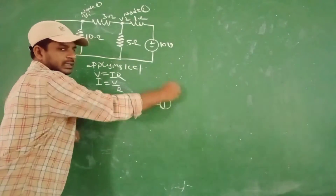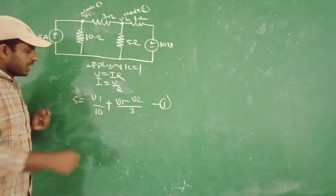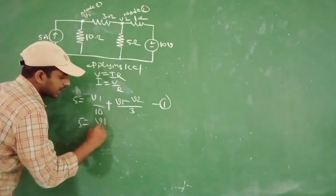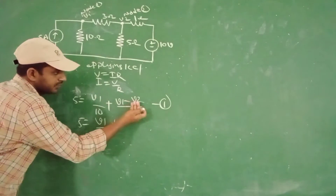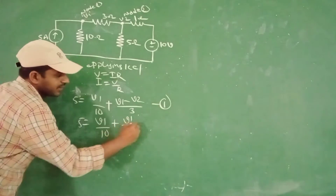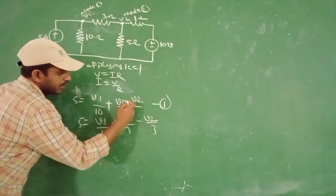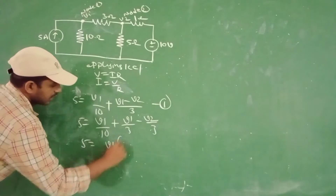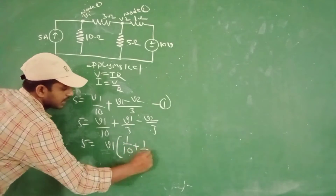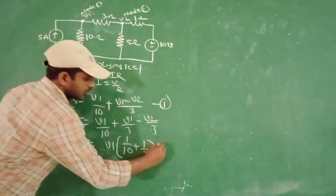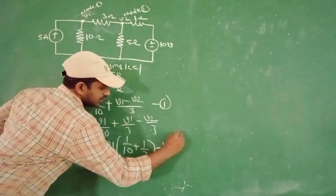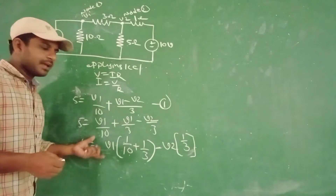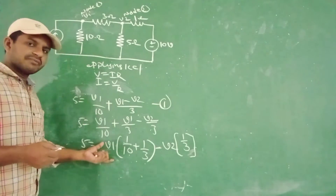This is the final equation from the given circuit at node 1. We are getting the equation like this. If you want to simplify this equation, finally we get 1 by 10 plus 1 by 3 terms. If you want to expand this equation, what we are getting here is V1 by 3 minus V2 by 3. If you want to take the V1 term, we get 1 by 10 plus 1 by 3, and for the minus V2 term we get 1 by 3. This is the expression from equation 1.